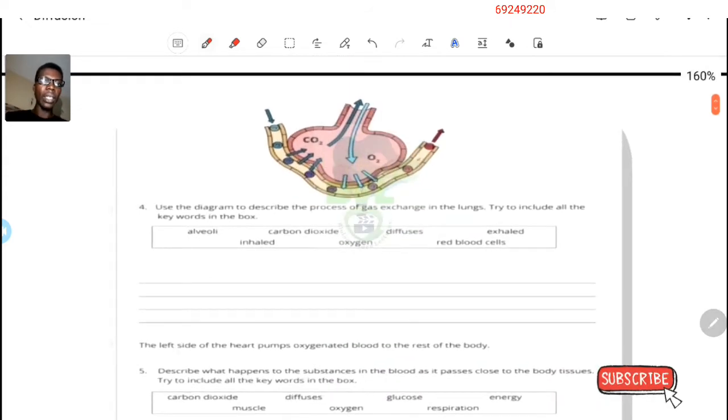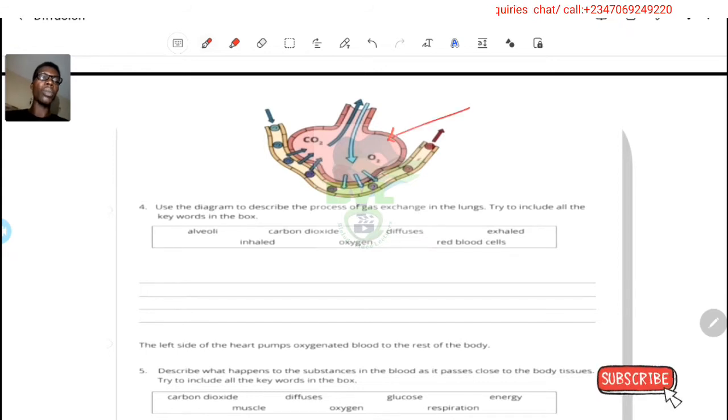It says here, use the diagram above to describe the process of gas exchange in the lungs. Try to include all these words in the box. So of course, this structure is the alveolus in the lung, and this is the blood capillaries surrounding it. Let me just call it one in this instance.